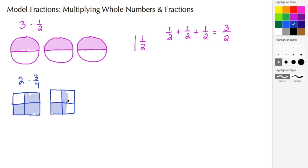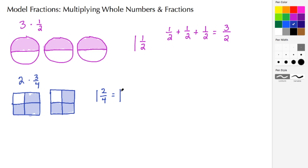Once the shading has been completed it becomes a counting exercise. Here I have one-fourth, two-fourths, three-fourths, four-fourths — we know that four-fourths signifies one whole — and then we're left with one-fourth, two-fourths. So this is really one and two-fourths. Two-fourths can be simplified: numerator and denominator divided by two gives us one-half.